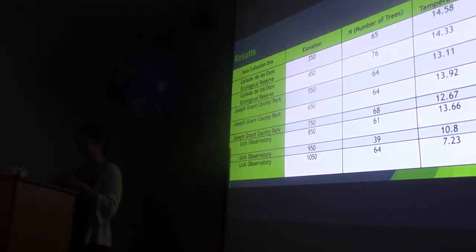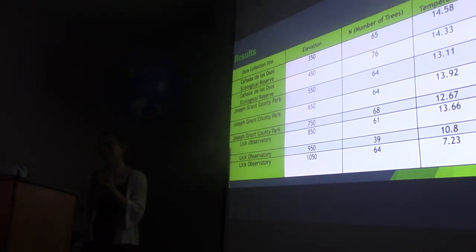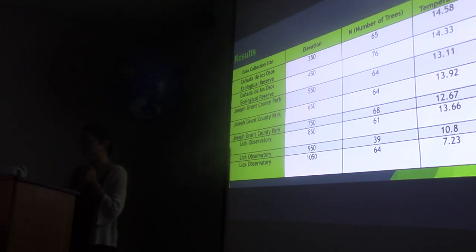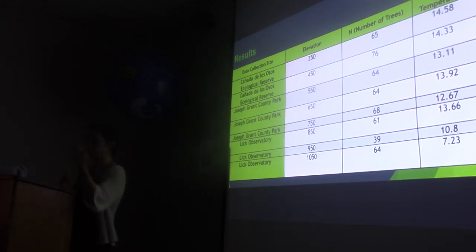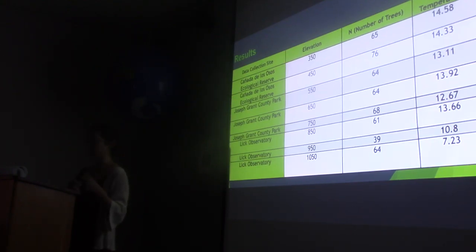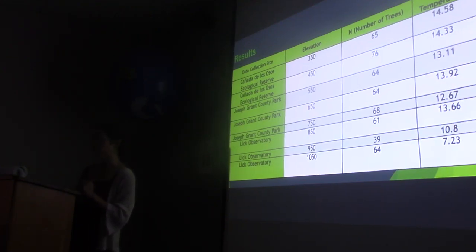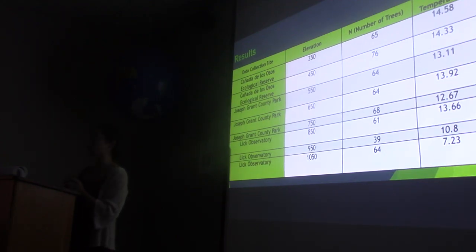A total of 502 oak specimens were sampled at different elevation sites. Cañada de los Osos, the lowest elevation site, had a mean temperature of 14.58 degrees Celsius, while the Lick Observatory at the 1050-meter elevation interval had a mean temperature of 7.23 degrees Celsius. This difference confirms the proxy that elevational studies require.